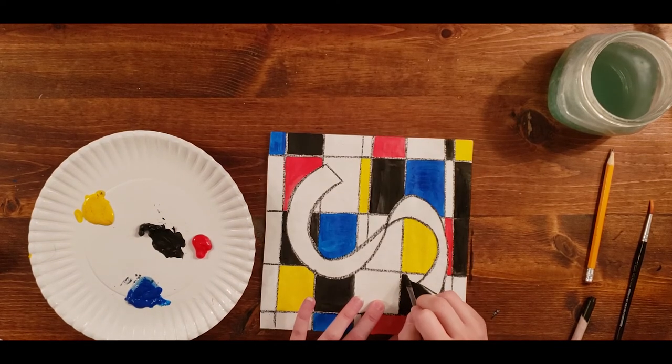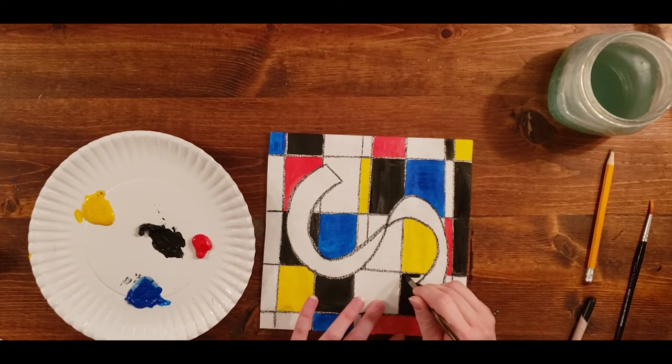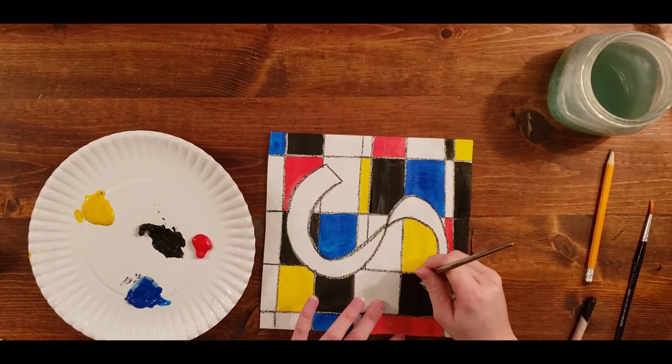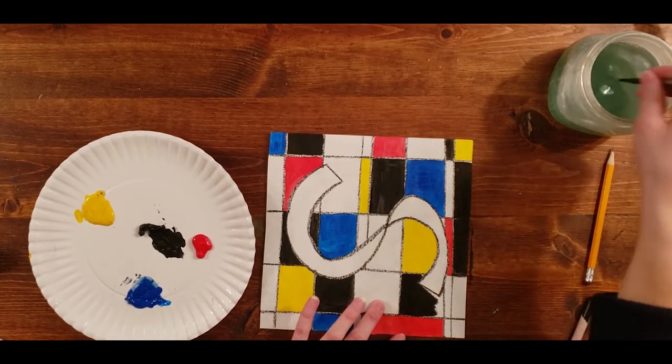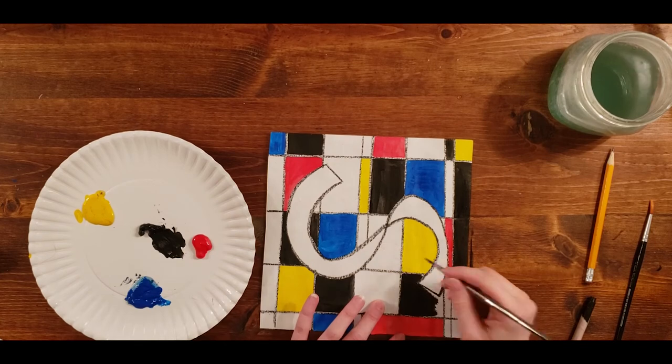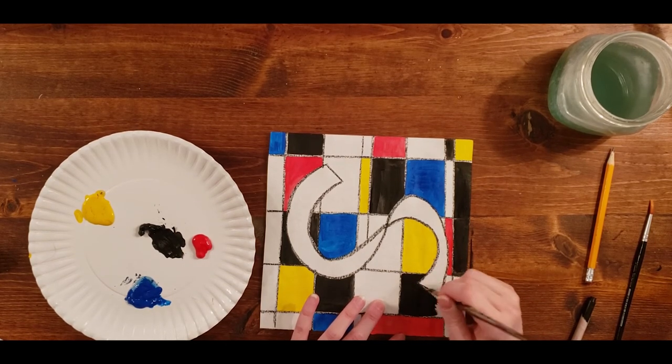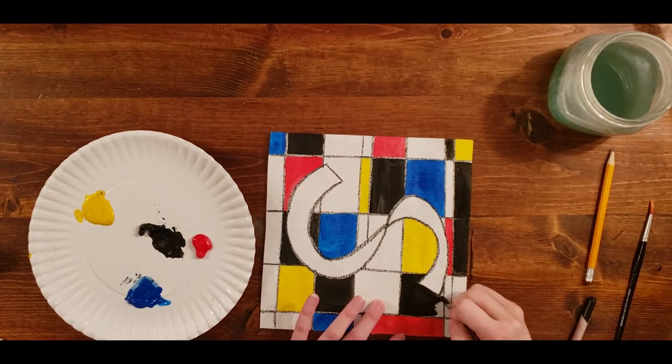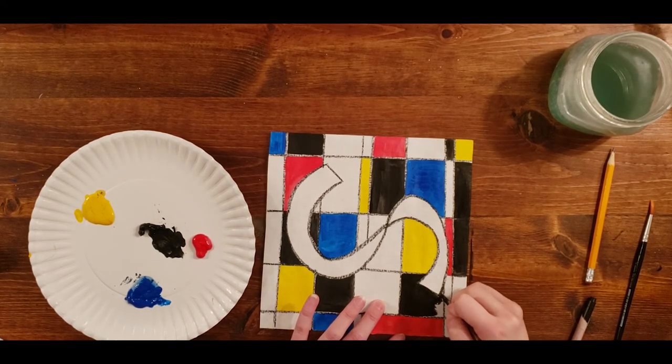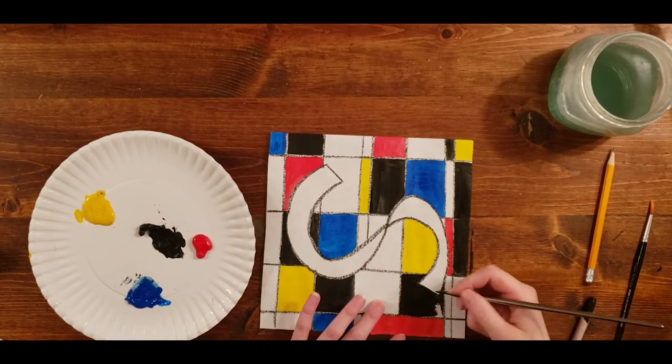Make sure while you're painting, you're filling in the square entirely. You don't want to leave any blank spots behind or it'll look unfinished, not very tidy. And when Mondrian was painting, his squares were always completely filled. He didn't leave any white marks behind. It was fully saturated. The only white that should be on your page is what's left purposefully to be a white square or your letter.